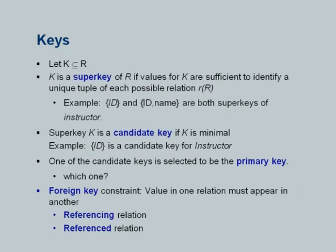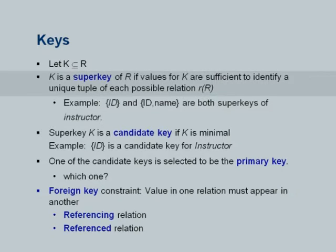A key is any non-empty subset of the set of attributes of the relation. We say that a particular key is a super key if the set of values in that key uniquely identifies a tuple for every legal instance of the relation. For example, in any university instructors have an identifier that must be unique — we should not have two instructors with the same identifier. Therefore, we can say that the id value is a super key for instructor, because it uniquely identifies one instructor. A super key uniquely identifies a row.